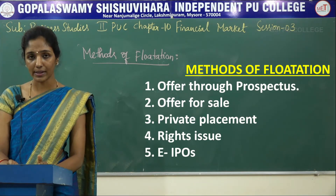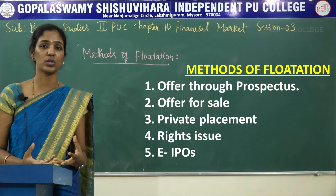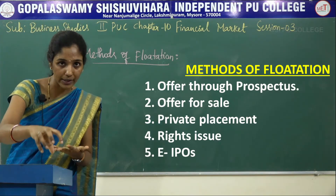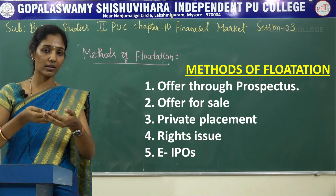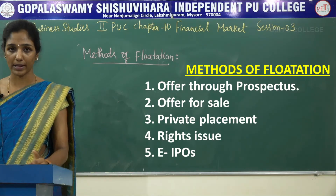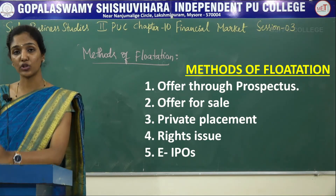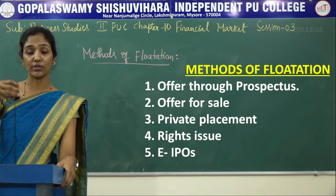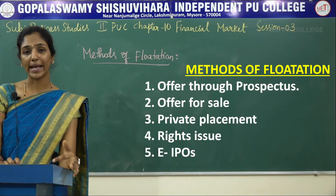Under the offer for sale method, companies are saved from the formalities and complexities of issuing securities directly to the public. The company first issues securities to intermediaries like brokers, and the brokers then sell those securities to the public. The third method is private placement. Under this method, a company allots or issues its securities to selected individuals or institutions.